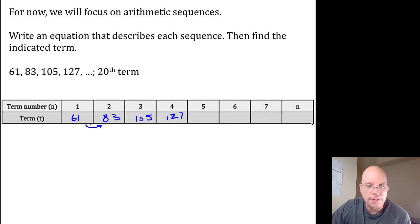22, looks like. To make sure that's consistent, if I add 22 to 83 I get 105, and if I add 22 more, 105 plus 22 is 127.